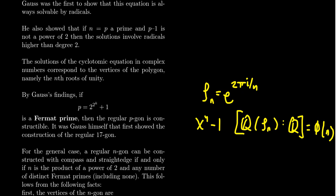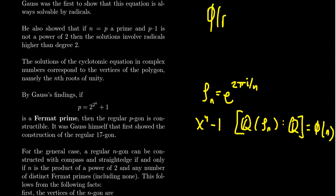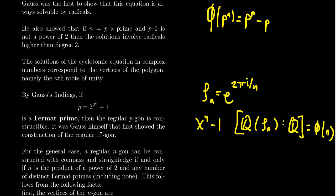When p is a prime number, this number is p minus 1. And when you have a prime power, phi of p to the n looks like p to the n minus p to the n minus 1, like so.